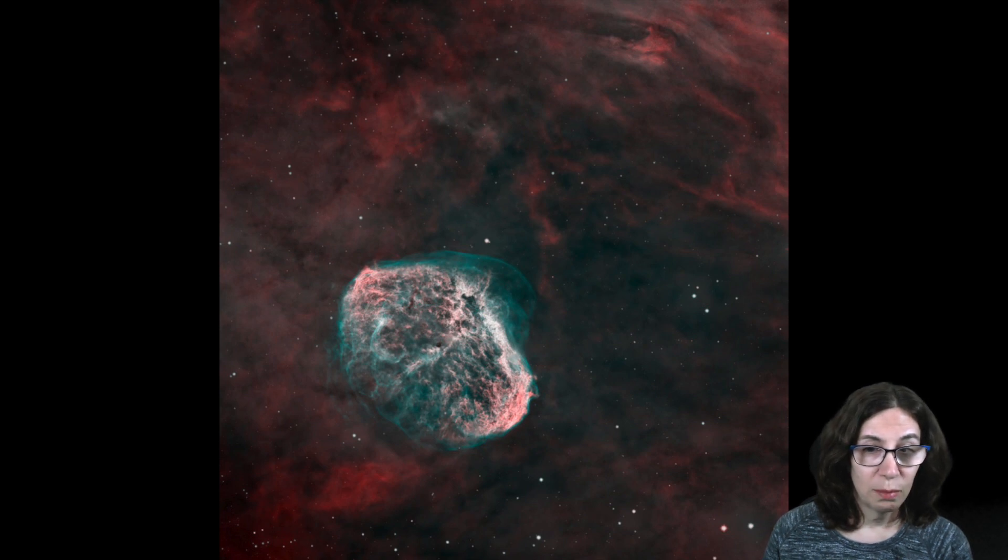The crescent nebula was discovered in 1792 by William Herschel. Herschel catalogued thousands of objects and actually produced three catalogues between 1786 and 1802.